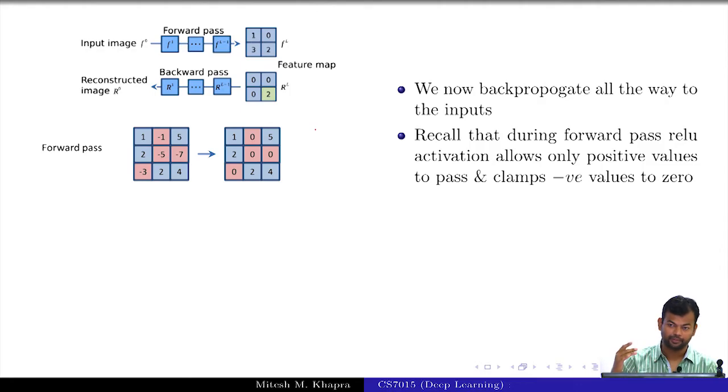What would happen to the gradients when they flow back through those neurons? You already did this. If an ReLU neuron is dead, the gradients do not flow back.